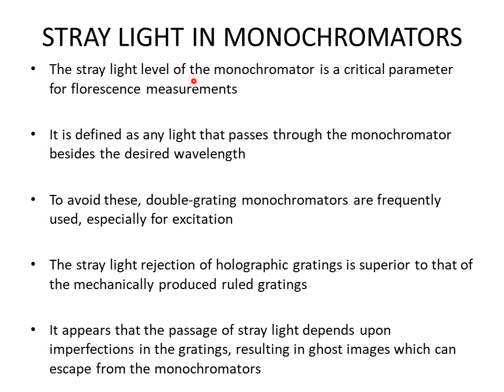Now we'll look at stray light in monochromators. The stray light level of the monochromator is a critical parameter for fluorescence measurement — the quality of fluorescence results is very much dependent upon it, which in turn depends on the quality of the monochromator. Stray light is defined as any light that passes through the monochromator besides the desired wavelength.